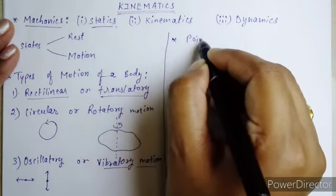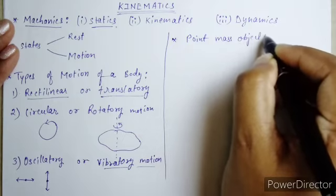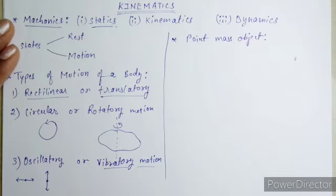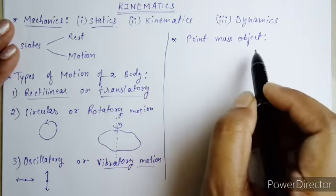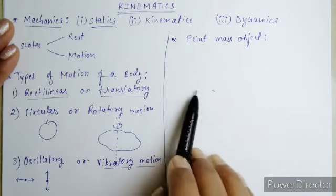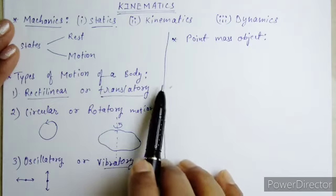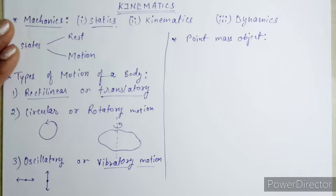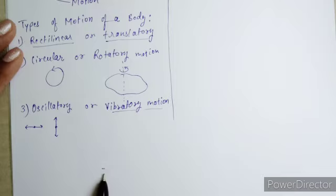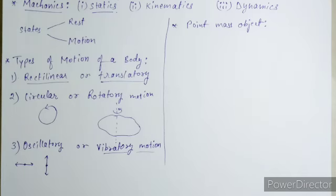Next is the Point Mass Object. It is similar to the point object discussed in Class 9th. A live example is an ant — our little friend which is very small in size, but the distance it covers in an hour is much greater than its own size, so it can be said to be a point mass object. Even a train can be a point mass object since it covers a long distance.